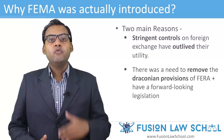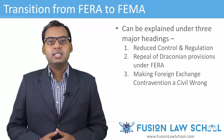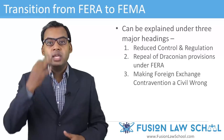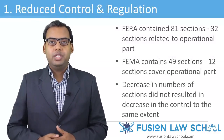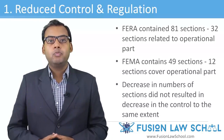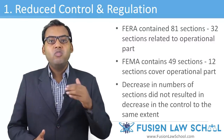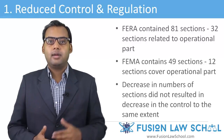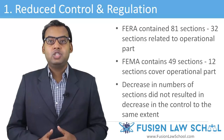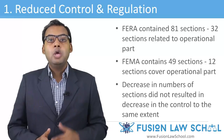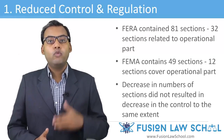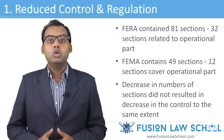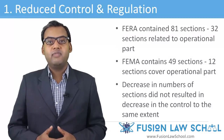The transition of the foreign exchange regulation regime from FERA to FEMA can be explained under three major headings. The first is reduced control and regulation. FERA contained 81 sections — some were deleted in the 1993 amendment — of which 32 sections related to the operational part and the rest covered penal provisions and powers of enforcement directorate. FEMA, on the other hand, contains 49 sections, of which only 12 sections cover the operational part. However, this does not mean control has been reduced proportionately, as what was a full section under FERA seems to have been reduced to a sub-clause under FEMA in some cases.